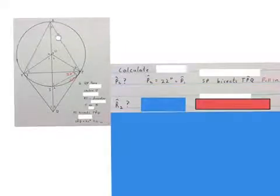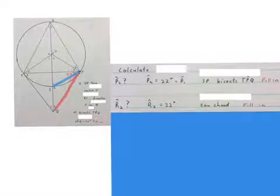Next they want us to calculate R2, that's in the corner up there. R2 will also be 22 degrees. Why? Yes, because of the tan-chord theorem. There's the tan, there's the chord, that 22 is the same as that 22 up there.